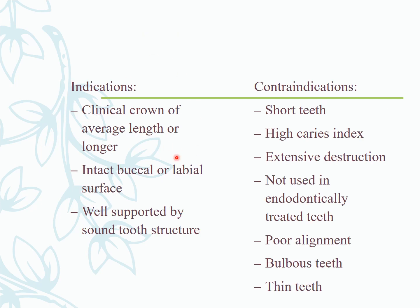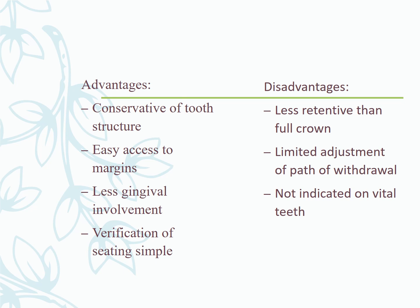Indications for partial veneer crowns include clinical crowns of average or longer length, intact buccal or labial surfaces well supported by sound tooth structure. Contraindications include short teeth where resistance and retention form would be insufficient, high caries index, extensive destruction, endodontically treated teeth, poor alignment, bulbous teeth, and very thin teeth.